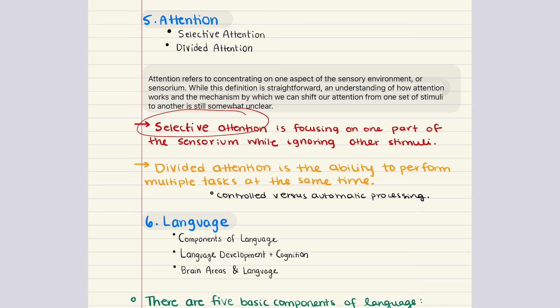A good example is learning to drive. At first, drivers intensely grip the steering wheel and pay attention to every detail of the road. But as you become more accustomed to driving, you can relegate some aspects — like knowing how hard to push on the pedal — to automatic processing, letting the driver perform secondary tasks like changing the radio station. So selective attention is focusing on one part of the sensory environment while ignoring other stimuli, and divided attention is the ability to perform multiple tasks at the same time.